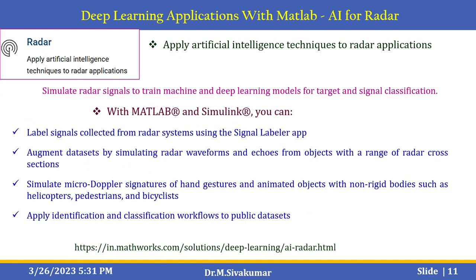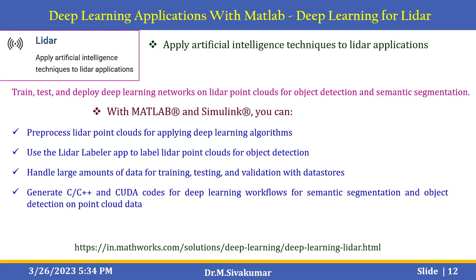AI techniques can be applied to radar applications in MATLAB. You can simulate radar signals to train machine learning and deep learning models for target and signal classification. Signals collected from radar systems can be labeled using the Signal Labeler app. Datasets can be augmented by simulating radar waveforms and echoes, and micro-Doppler signatures of hand gestures and animated objects such as helicopters, pedestrians, and bicyclists can also be simulated.